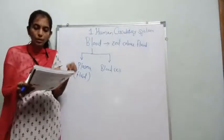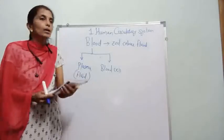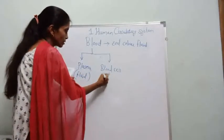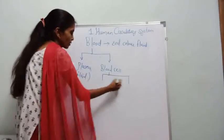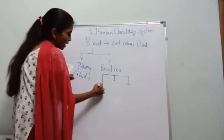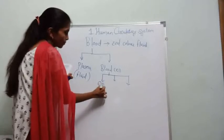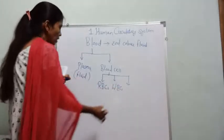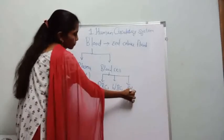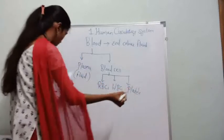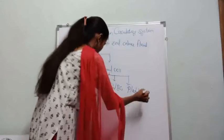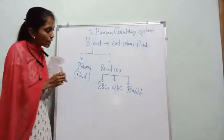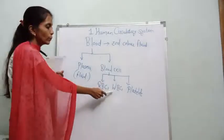In the blood, blood cells are also present. There are three types of blood cells: RBCs, WBCs, and platelets.